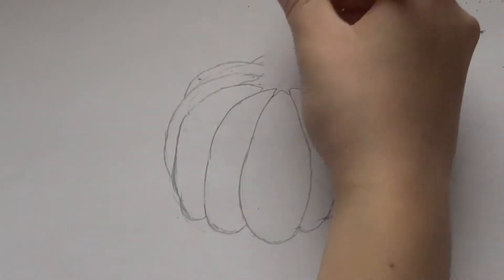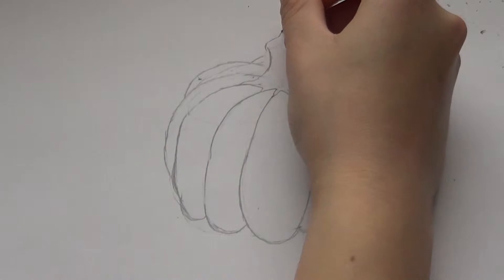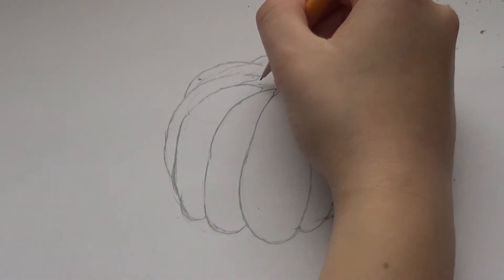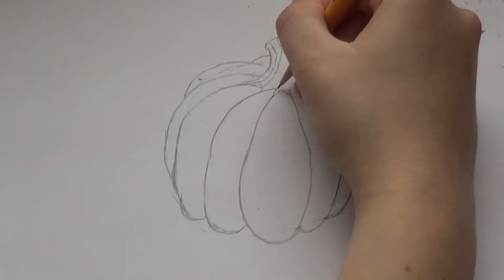For the stem it can help to look at a real pumpkin. Then I'm going to go from those creases in the pumpkin and draw lines going up the stem to divide the stem.